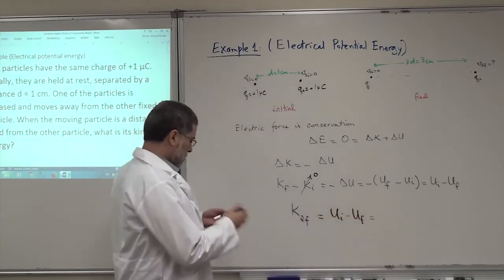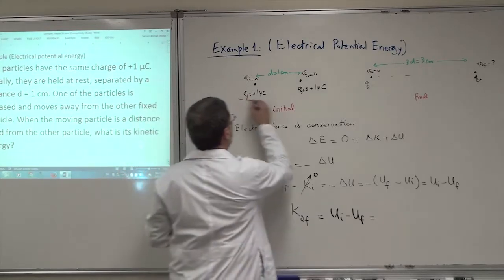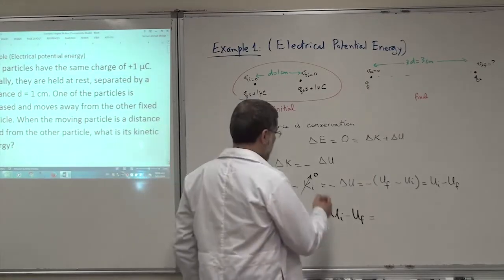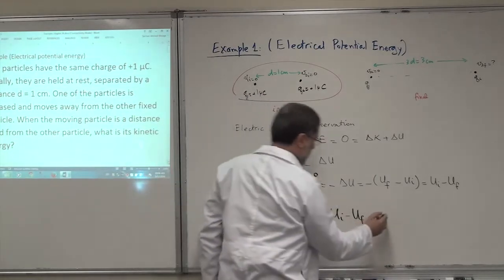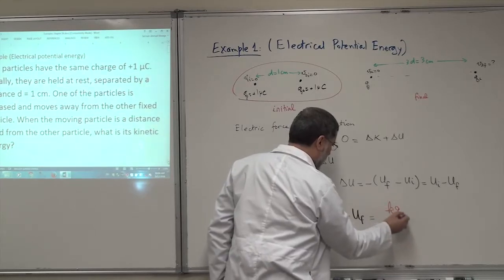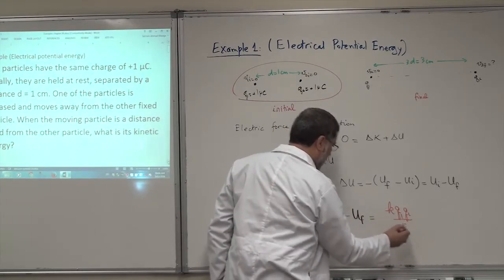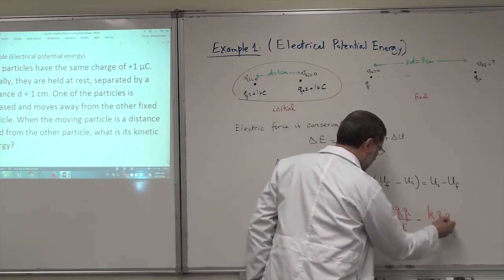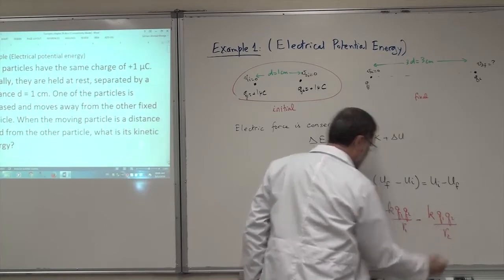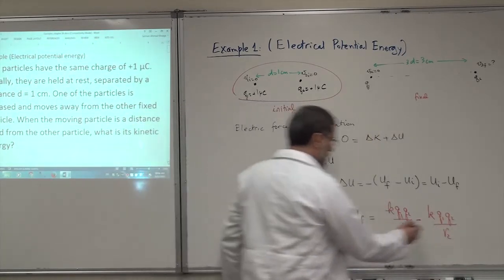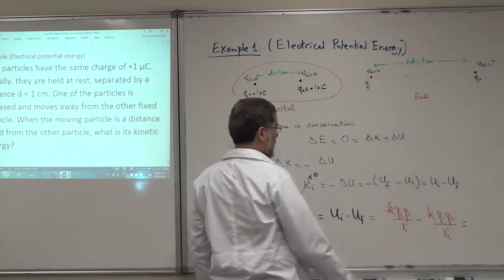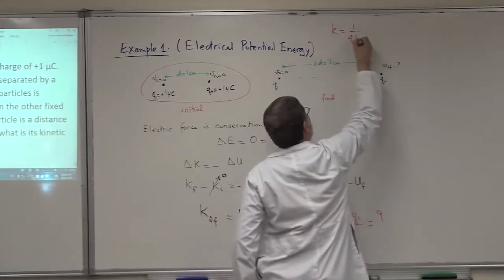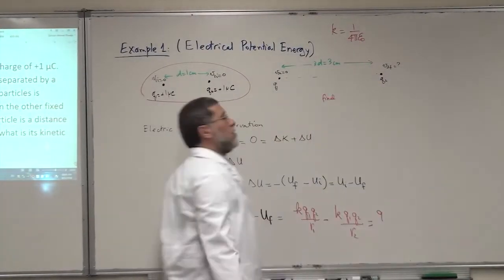What is U initial? The potential energy of this two-particle system is K times Q1 times Q2 over R, the distance between them. The Coulomb constant K equals 1 over 4π epsilon-zero, which is 9 times 10 to the power 9 Newton meter squared per Coulomb squared.